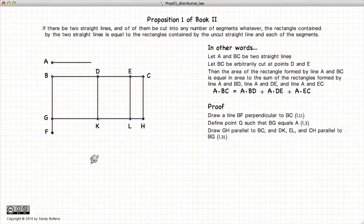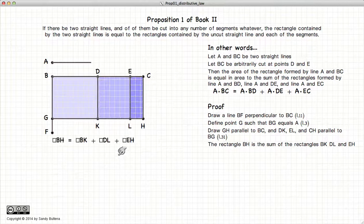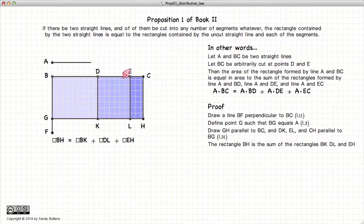All right, now the area of the rectangle BH is going to be equal to the sum of the individual rectangles BK, DL, and EH.